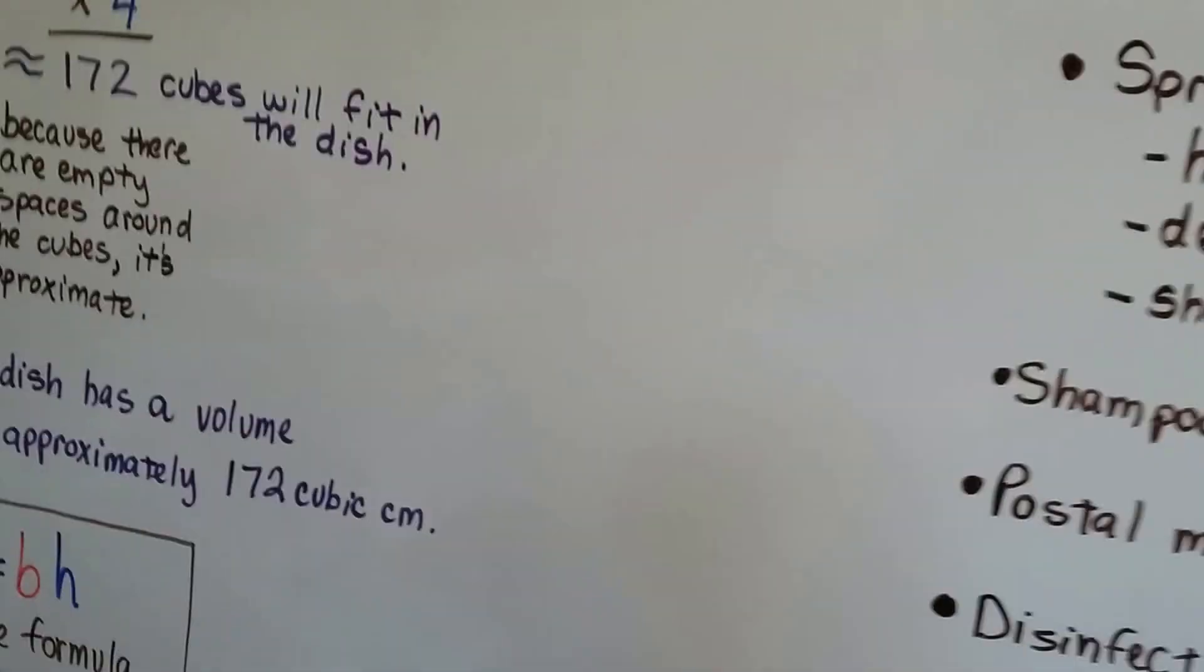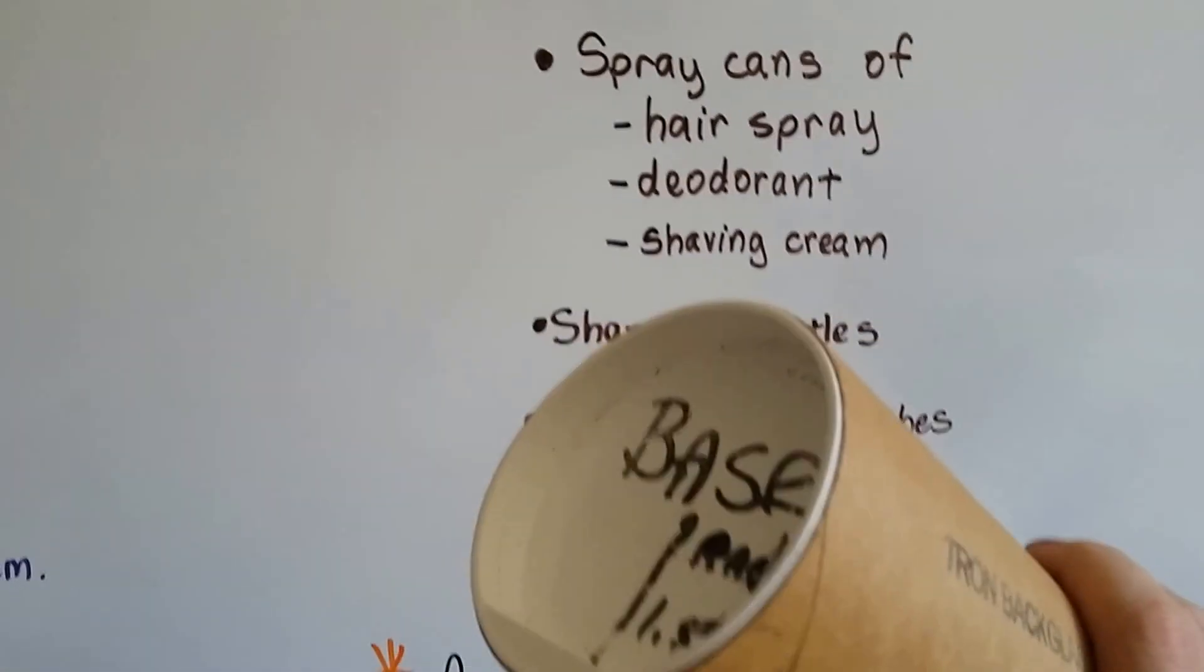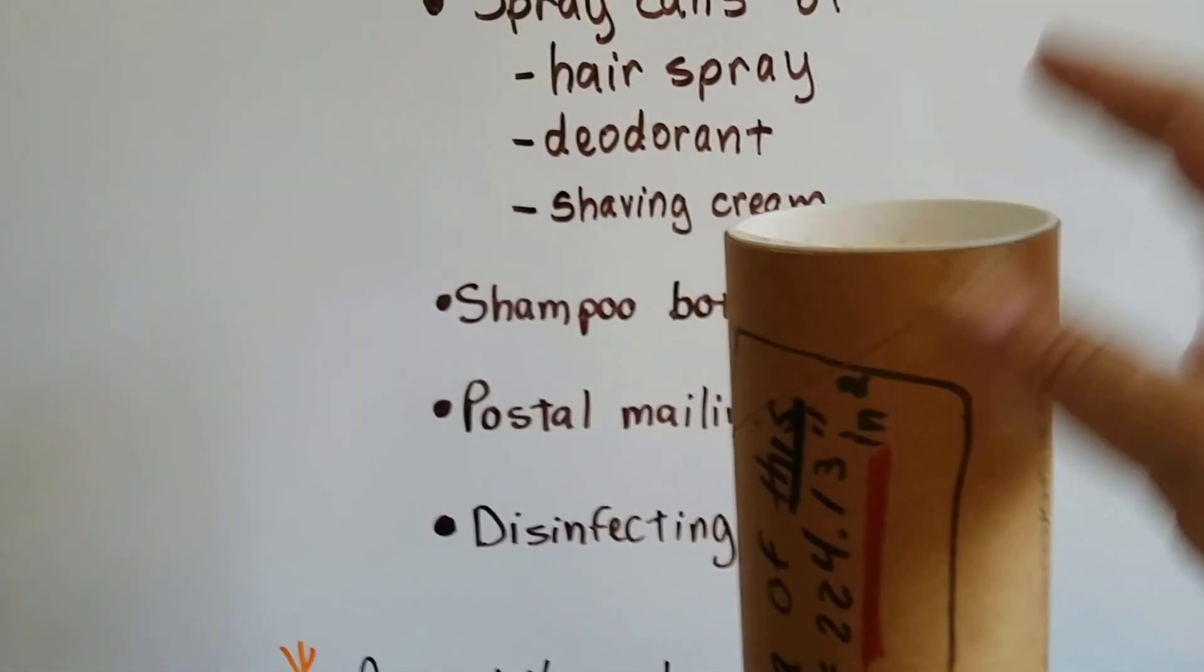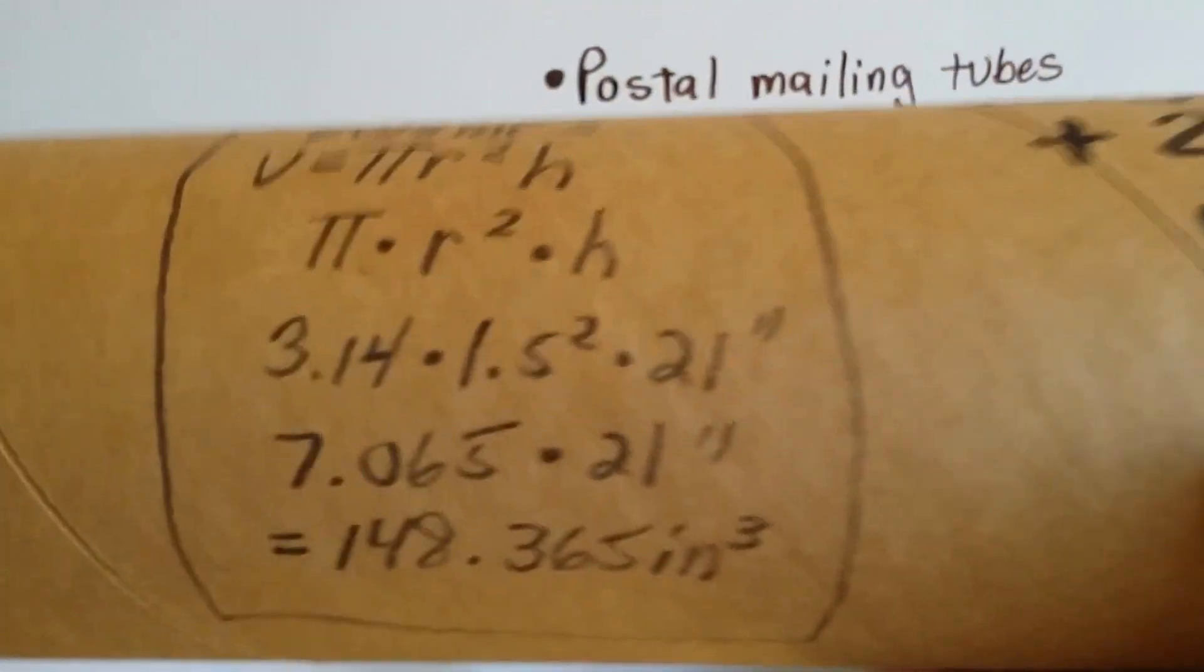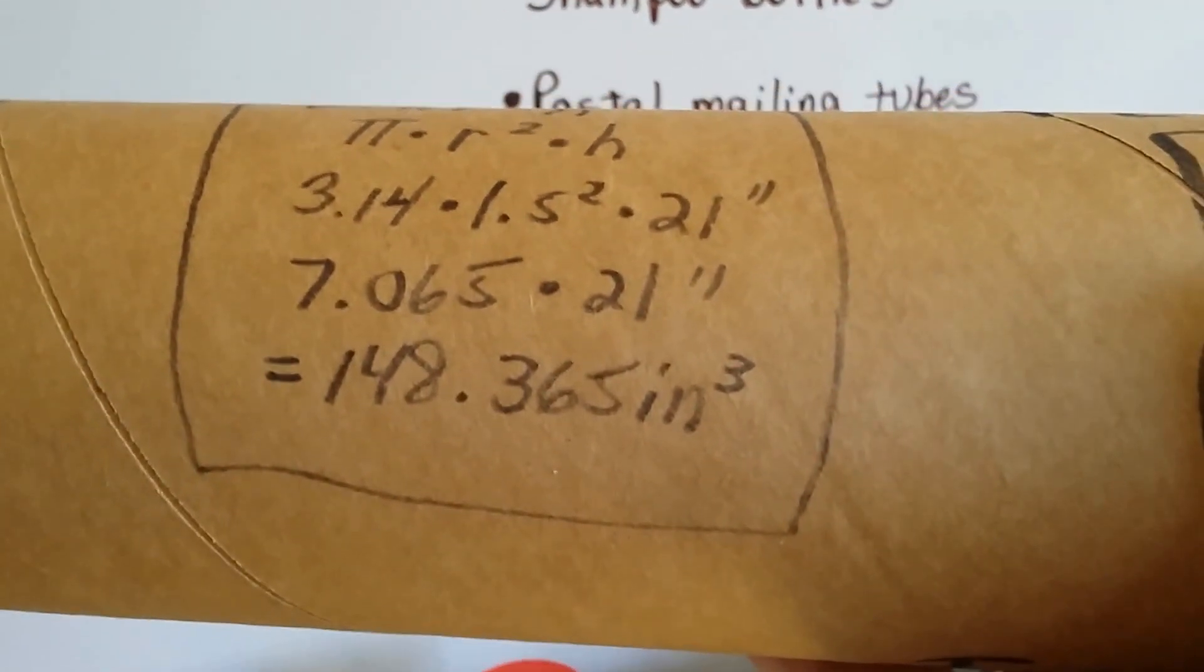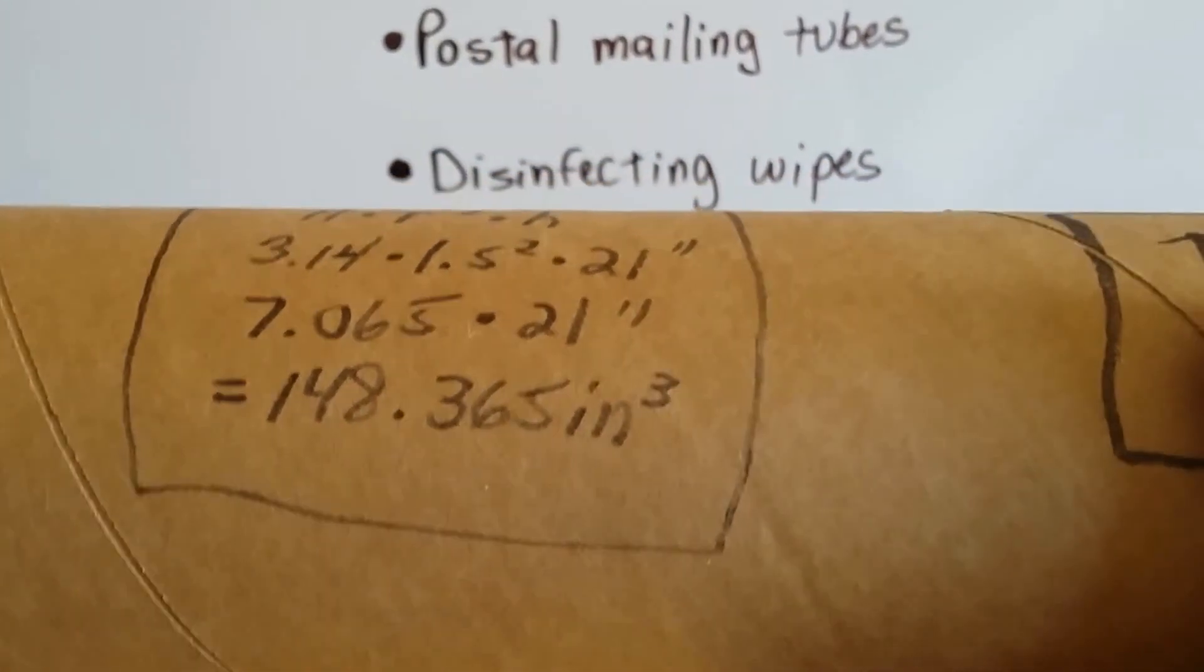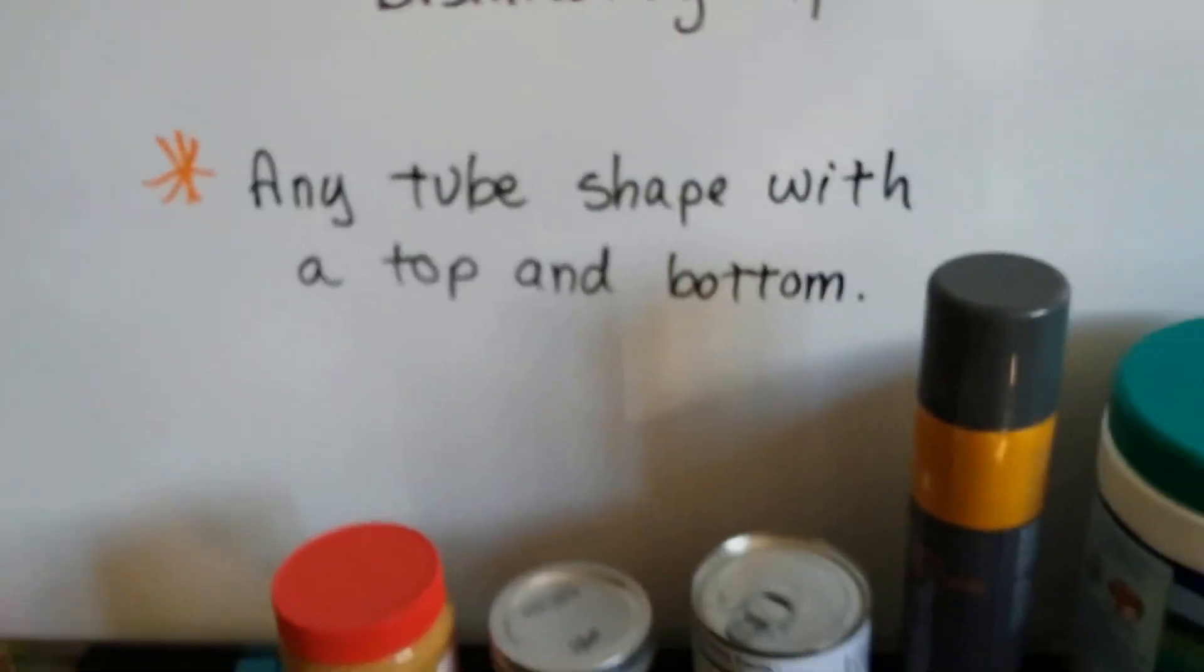So here I have a postal mailing tube that I got a map inside of here. It's an old map. And here's a base on the top. And this comes off, and you can put a poster or a map inside of this, and then you can mail this. And it's got a base on the bottom. And I actually figured out that the volume is 148.365 inches cubed, with the little three there for cubic. So that's what this tube is.